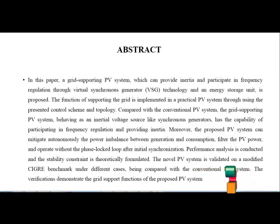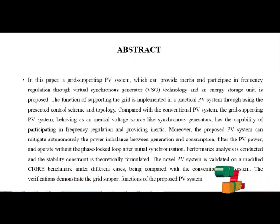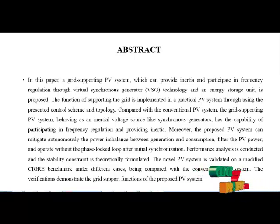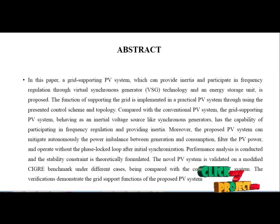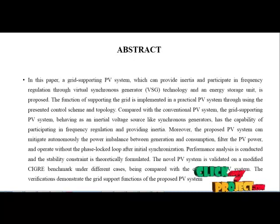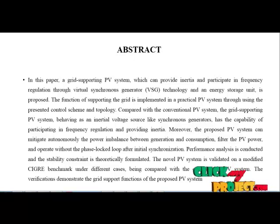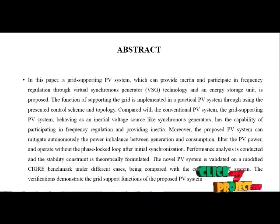Comparing the conventional PV system and grid-supporting PV system: the proposed system behaves like an initial voltage source similar to a synchronous generator, with the capability of frequency regulation and providing inertia. The proposed PV system automatically mitigates power imbalance between generation and consumption, filters the PV panel output, and operates without a phase-locked loop after initial synchronization. The performance analysis of connecting and stabilizing the system is theoretically formulated, validated on a modified benchmark under different cases compared with the conventional PV system.